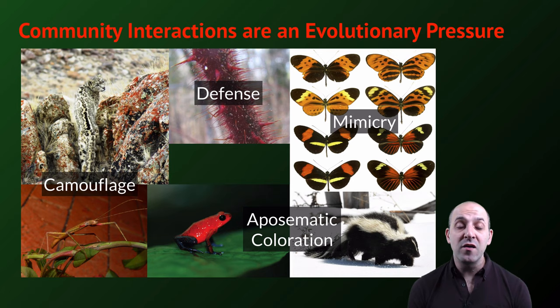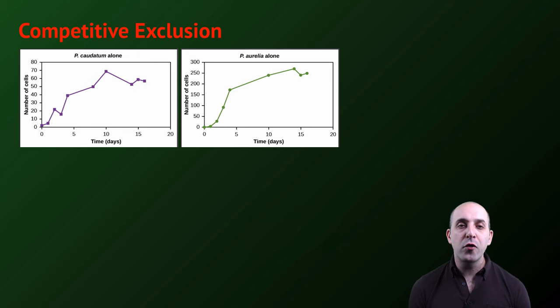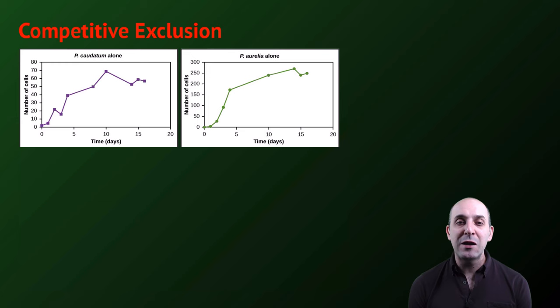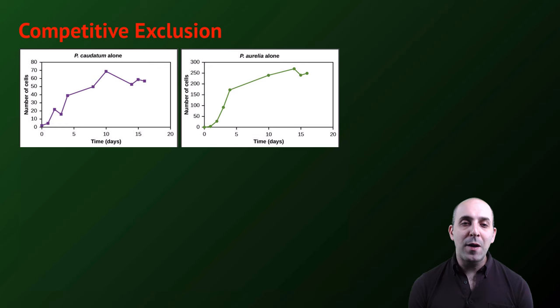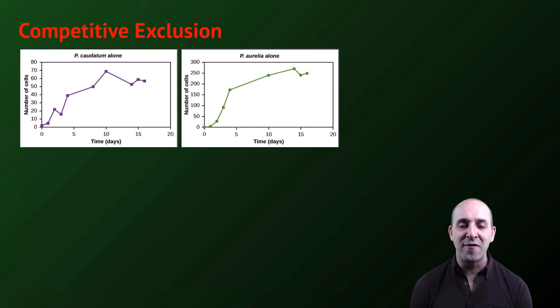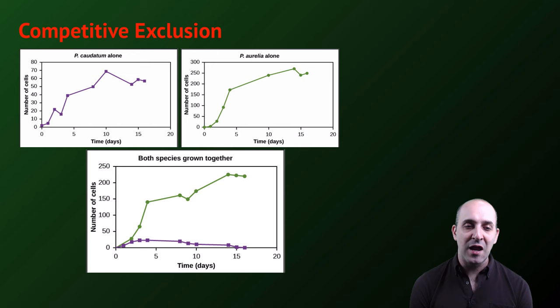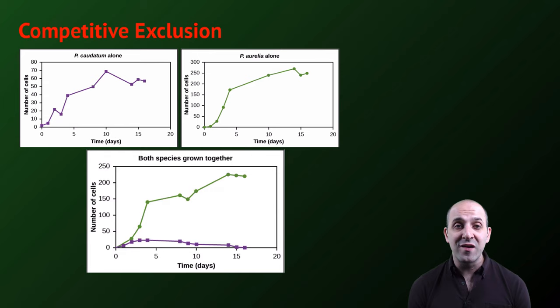Moving away from individual adaptations, we can see other things at work when we consider how community members interact. One major principle that's been recognized for quite some time is the notion of competitive exclusion. This refers to what happens when two populations that compete with each other for resources are put into the same environment. Some of the original studies that elucidated this mechanism were done on populations of paramecia. You can see data from two different populations of paramecia that were grown separately, showing approximately logistic growth. Initially the populations are in an exponential growth period, and then both seem to level off at their particular carrying capacities. The interesting thing is what happens when these two populations are put together — one population outcompetes the other, with the result being that the other population is driven to local extinction in the experimental environment. That's the principle of competitive exclusion.